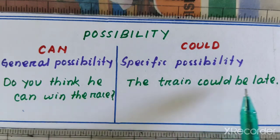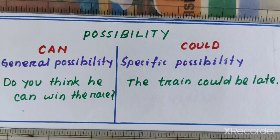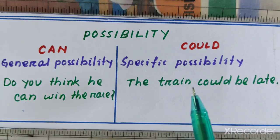In 'The train could be late,' could is used in a present form to denote specific possibility. As we are talking about a particular or specific train, we have used could here.